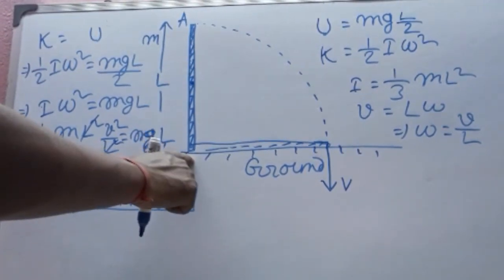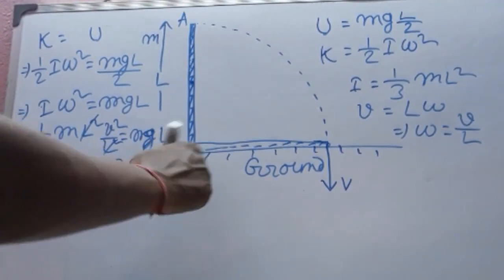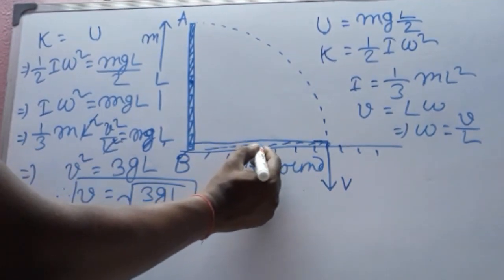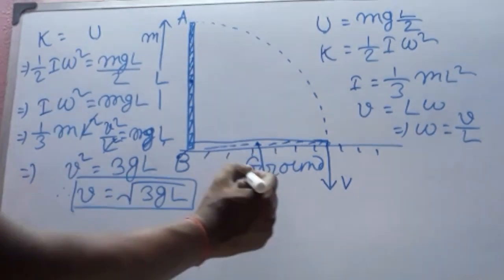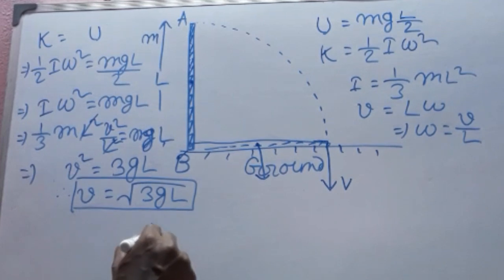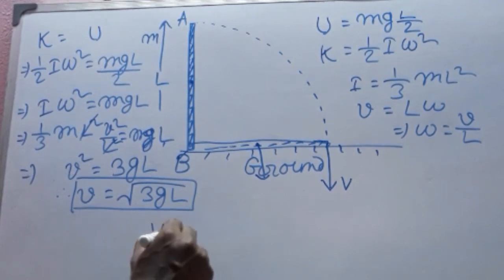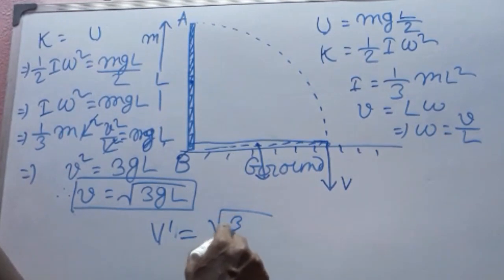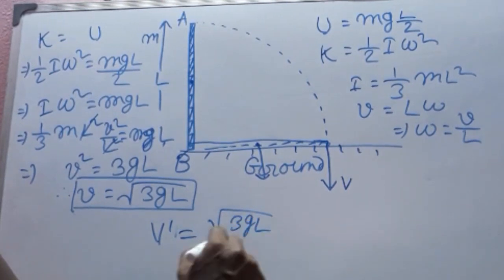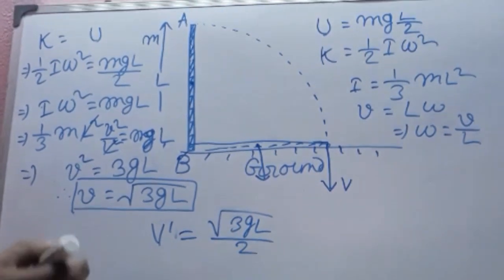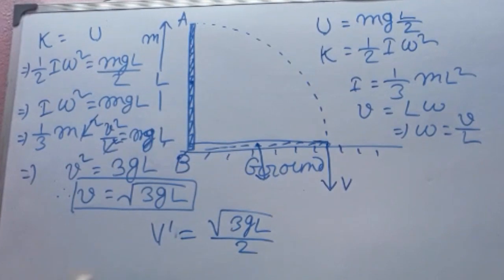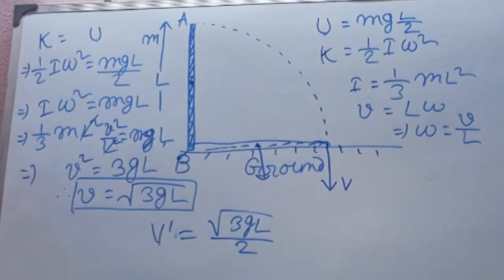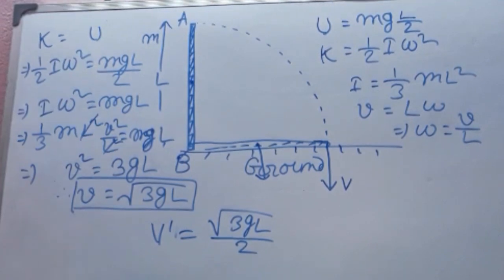The velocity of point B is zero since it is the pivot. If the velocity of the midpoint is asked, then the velocity of the midpoint will be root over 3gL divided by 2. The velocity of any point along the rod can be calculated similarly, since the end point has velocity V with rod length L.